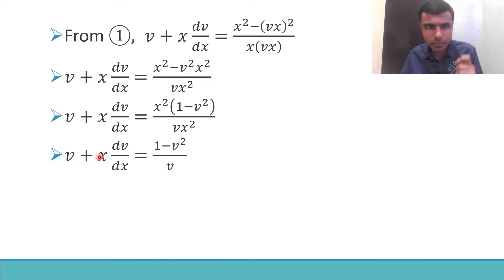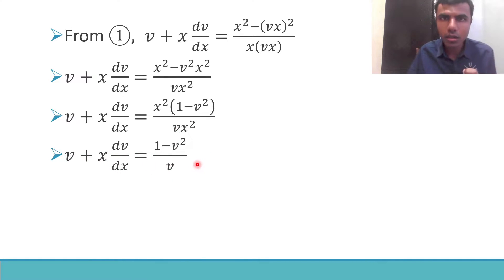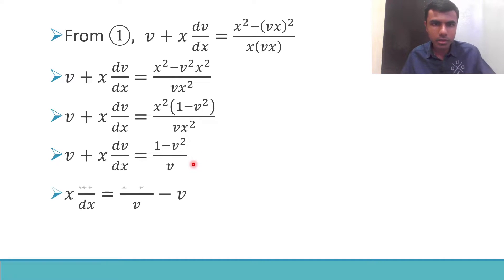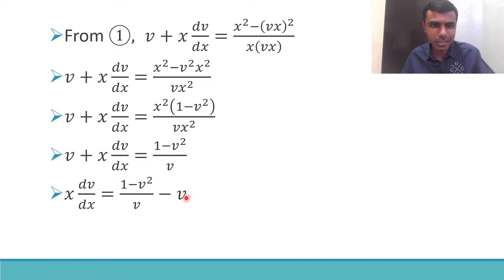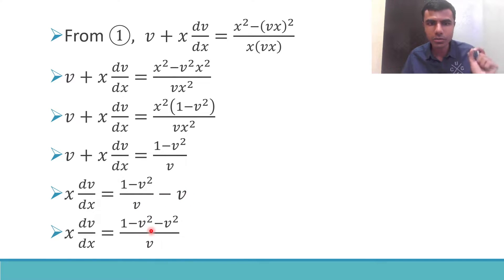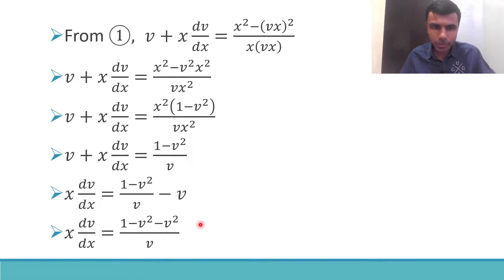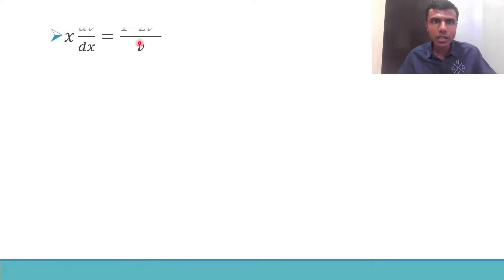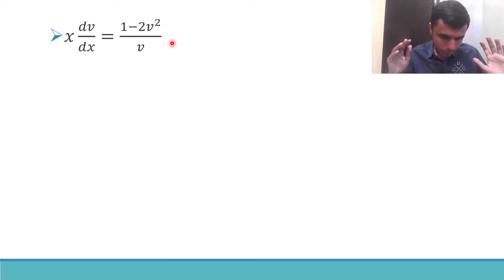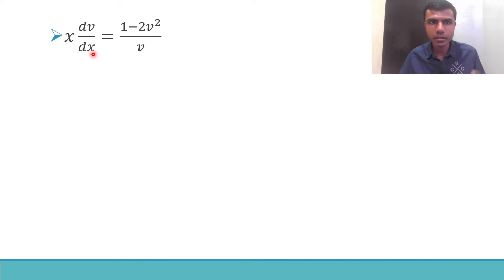Now send v to the RHS. Taking LCM, v goes over giving v times v which is v², and it's minus, so I get one minus v² minus v² all divided by v. And minus v² minus v² is nothing but minus 2v², so I get (1 minus 2v²) divided by v on the RHS.